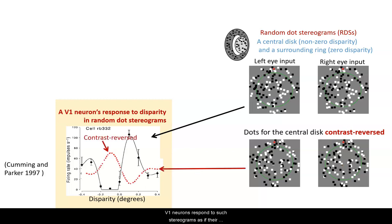V1 neurons respond to such stereograms as if their preferred disparities become anti-preferred and vice versa. This is as if V1 reports that the central disk is behind the ring.